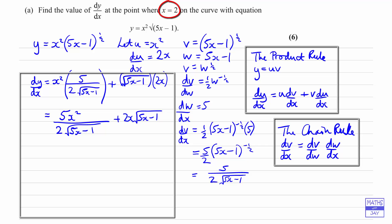So we want to find what dy by dx is when x is 2, so we simply substitute in. So when x is 2, dy by dx is 5 times 2 squared all over 2 times—now 5 times 2 minus 1 is going to be 10 minus 1, 9. The square root of 9 is 3.